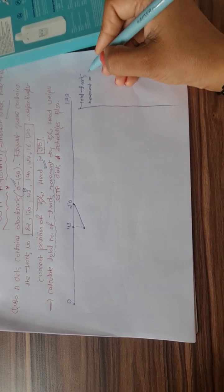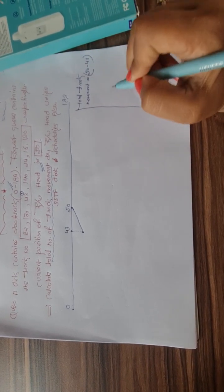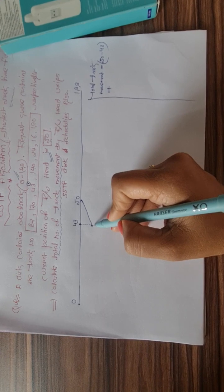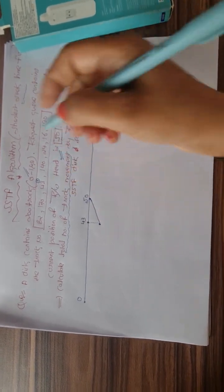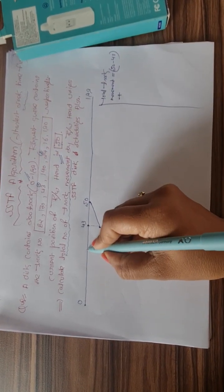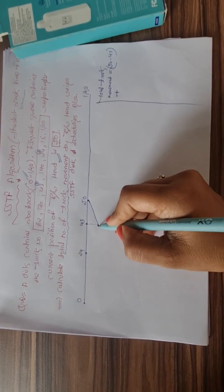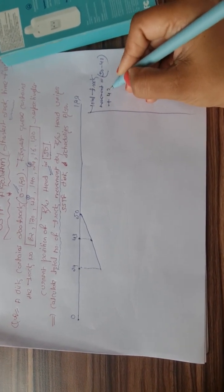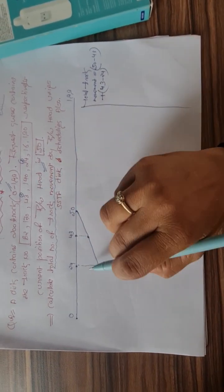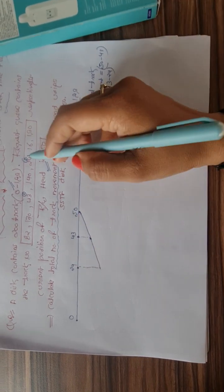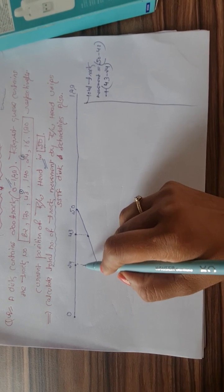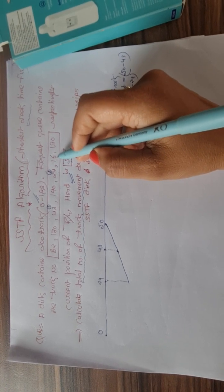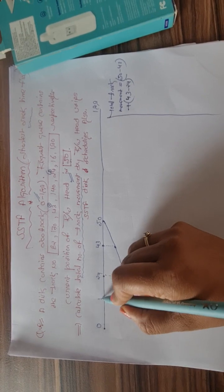The total track movement begins: 50 minus 43 is the first movement. From 43, we check which track has the shortest seek time next. That is 24, so the next movement is 43 minus 24. From 24, the shortest seek time is to position 16, giving us the next movement of 24 minus 16.